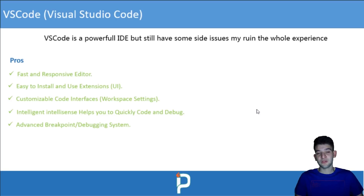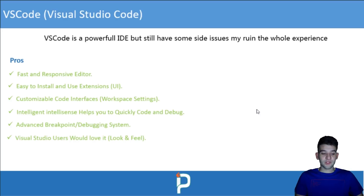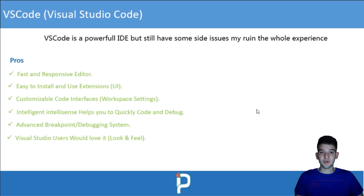If you're familiar with the normal Visual Studio 2017 or 2015, you'll definitely like VS Code's debugger and breakpoint system. Visual Studio users will also love the look and feel — it has a very unique layout, color scheme, and code coloring. I personally moved from full Visual Studio to VS Code for web development and liked it from the first look.